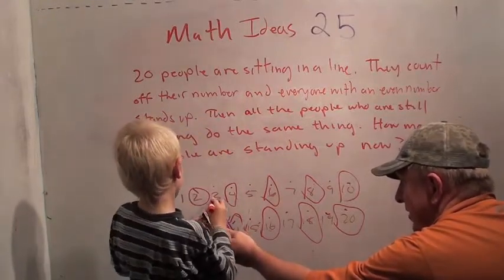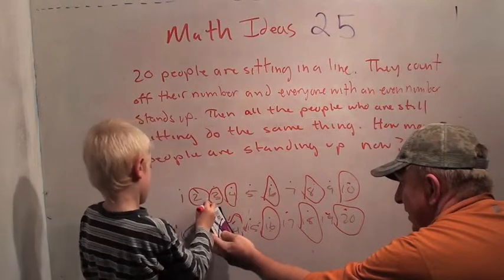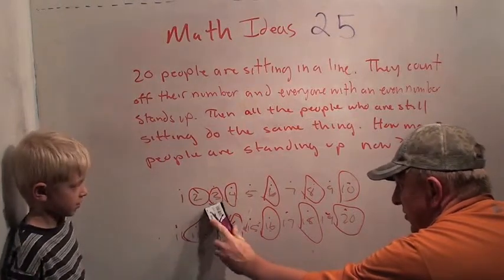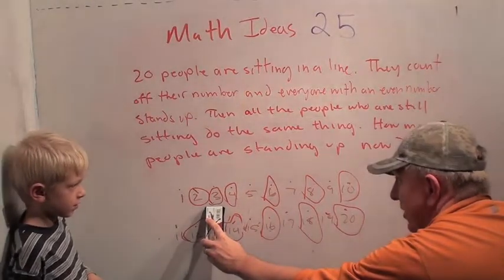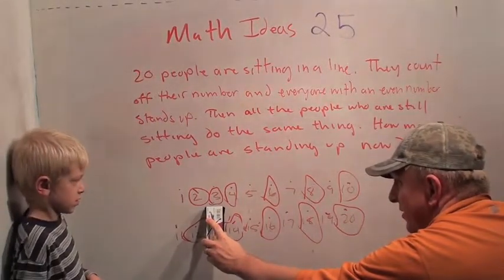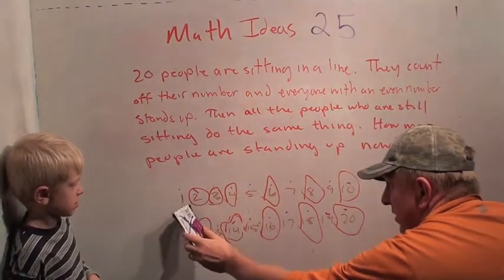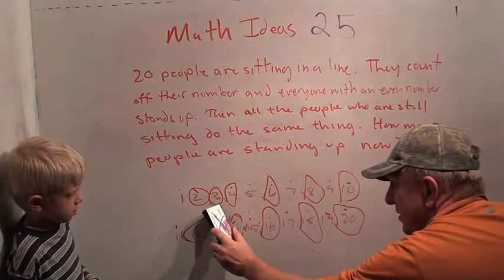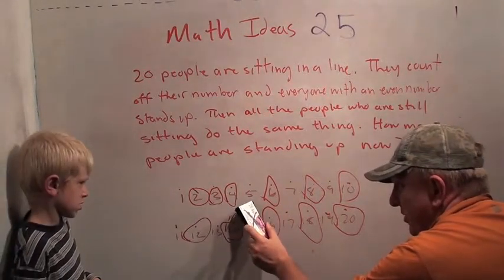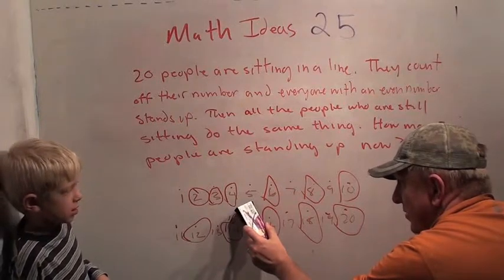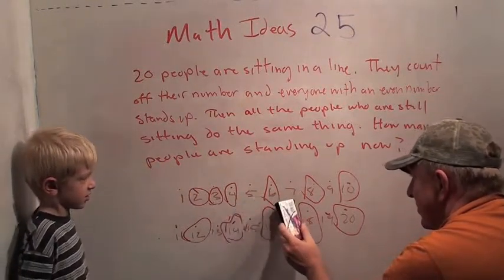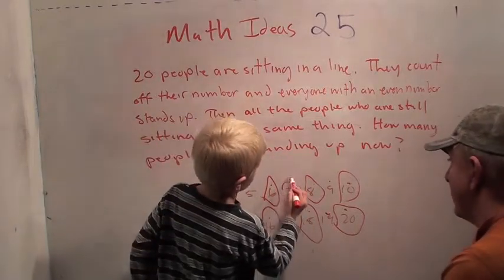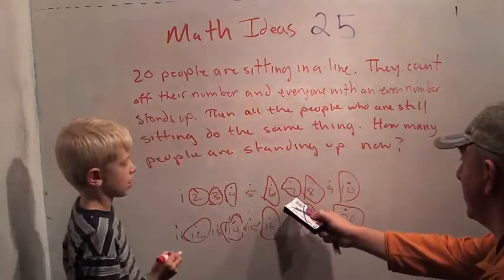Who's the second person sitting? Three. Three. Okay? So three is going to stand up. So why don't you circle three? Okay? Who's the next person who's going to stand up? Five. Are you sure? What number sitting person is five? This was one, two, three. Five is the third person sitting, right? Yeah. Okay. So who's the fourth person sitting? Seven. Seven. Okay. So circle seven.